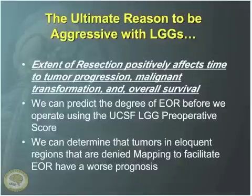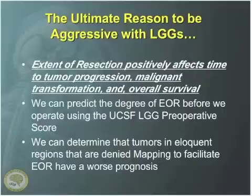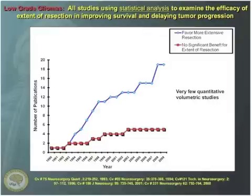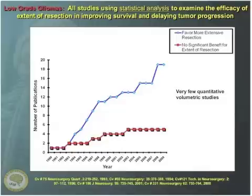The last slides point out that extent of resection will positively affect not only progression-free survival but malignant transformation and overall survival as well. A slide updated for this talk shows that as time has gone on, many more studies looking at extent of resection statistically indicate there's a much greater likelihood that you're going to benefit your patient by being aggressive with the resection. By being aggressive surgically, you're going to see a benefit to these patients in terms of overall survival.